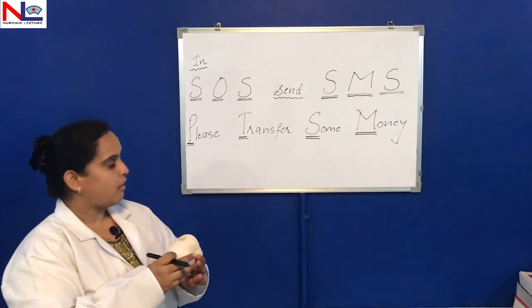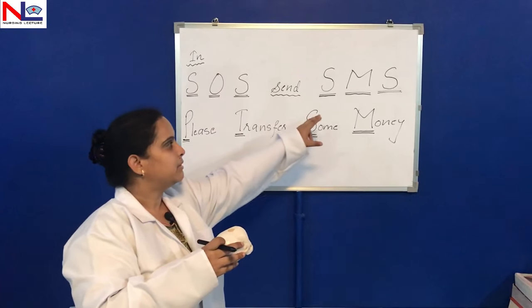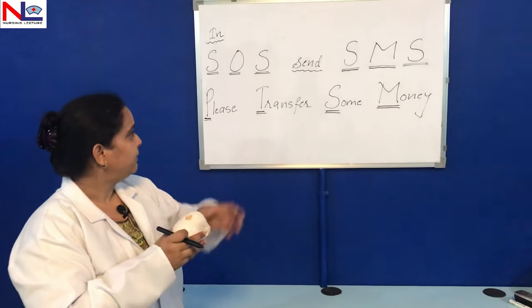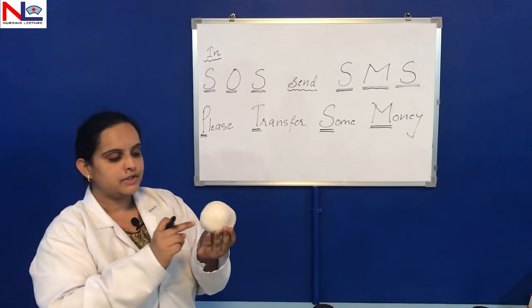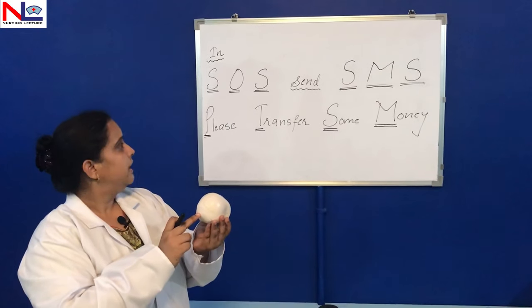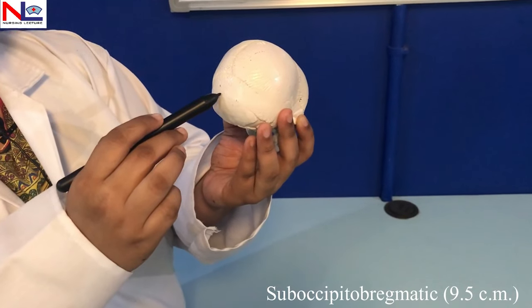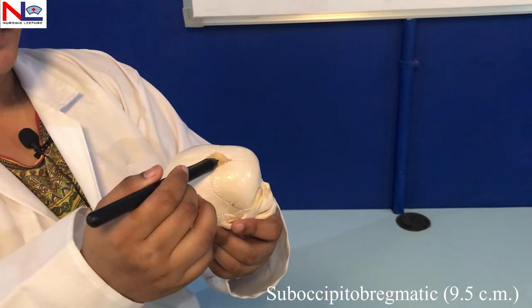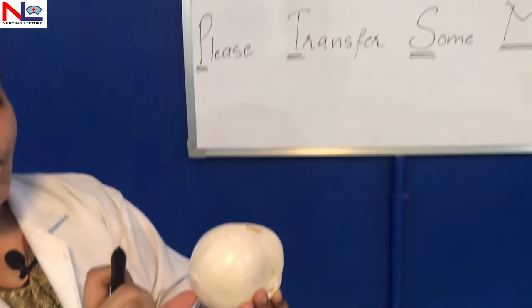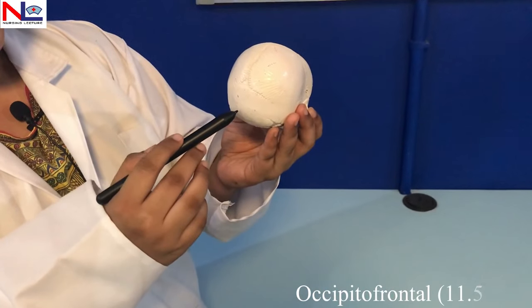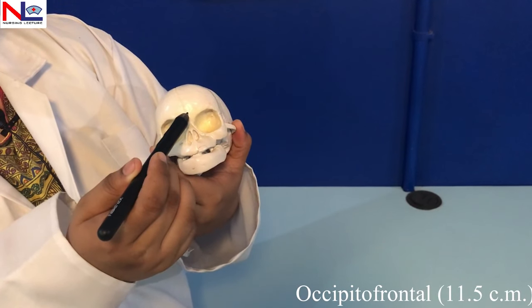To understand the diameters, there is an easy trick: 'SOS Send SMS Please Transfer Some Money.' Starting with the anterior posterior diameters — SOS indicates diameters starting from the occipital region. S denotes suboccipitobregmatic: the point from below the occipital protuberance to the bregma, about 9.5 cm. O denotes occipitofrontal: from the occipital protuberance to the glabella (the point between the eyebrows), about 11.5 cm.